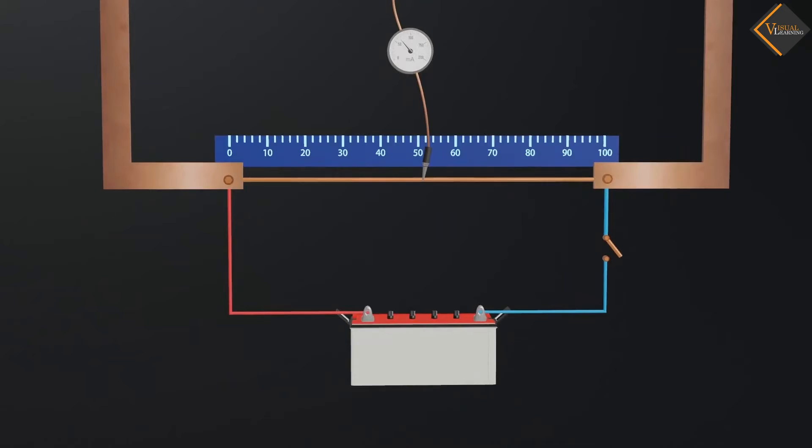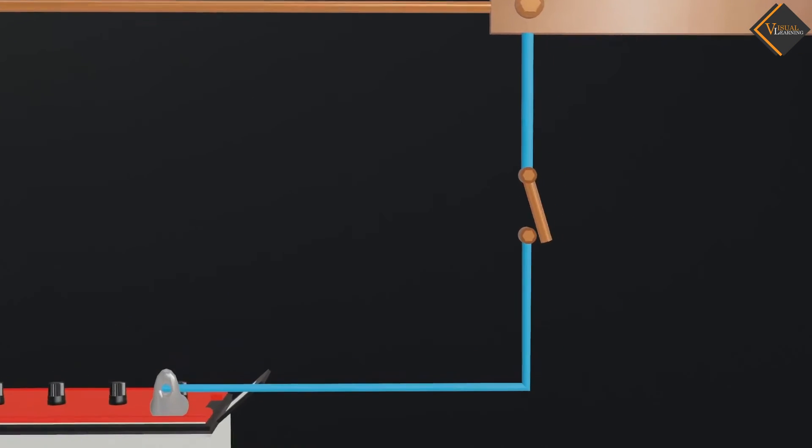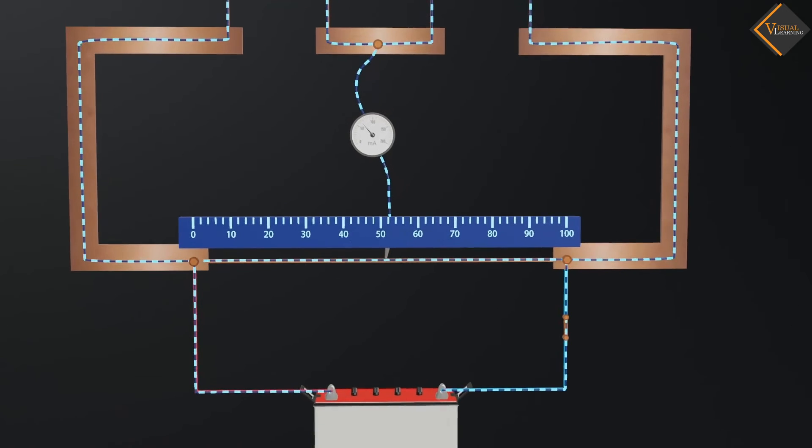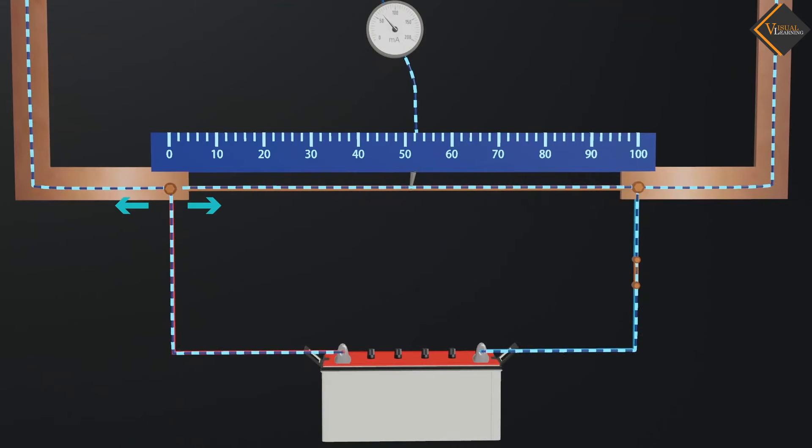Now let's understand how the meter bridge works. In the animation, when the switch is turned on, the current divides between the wire and the resistance box, because they are connected in parallel to the battery.